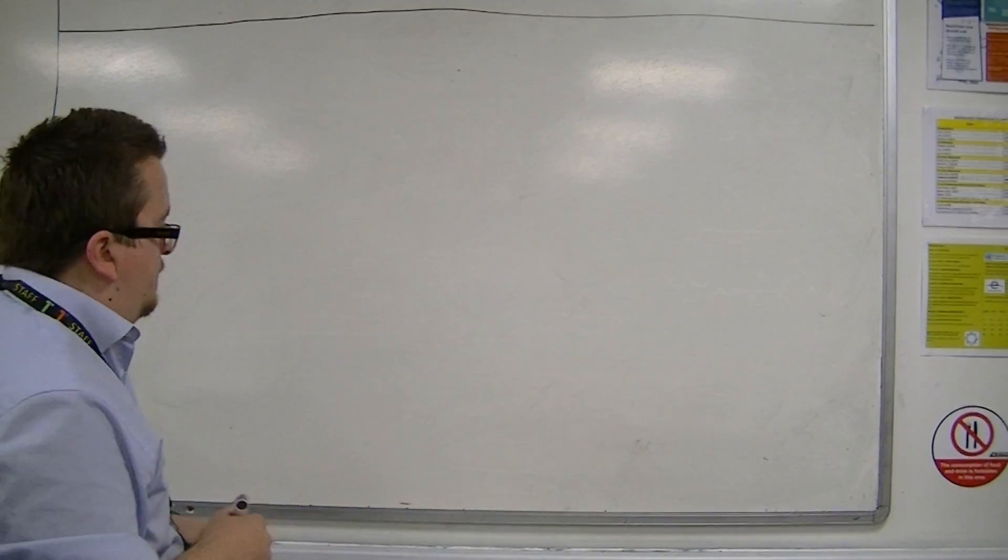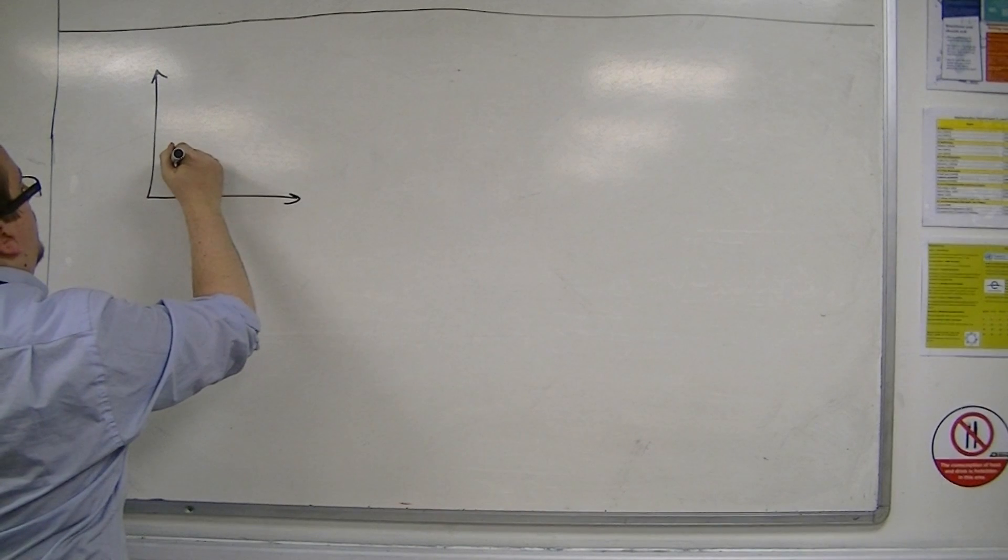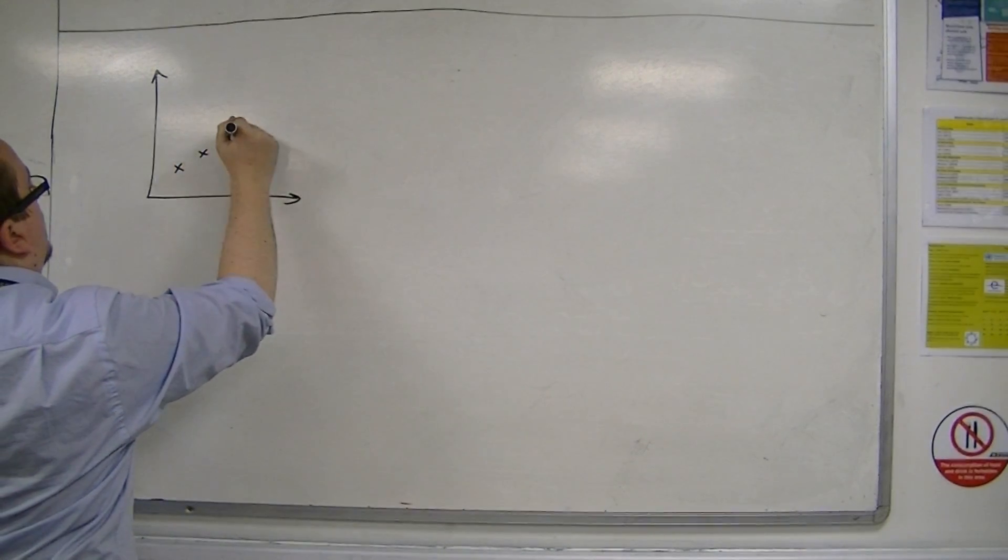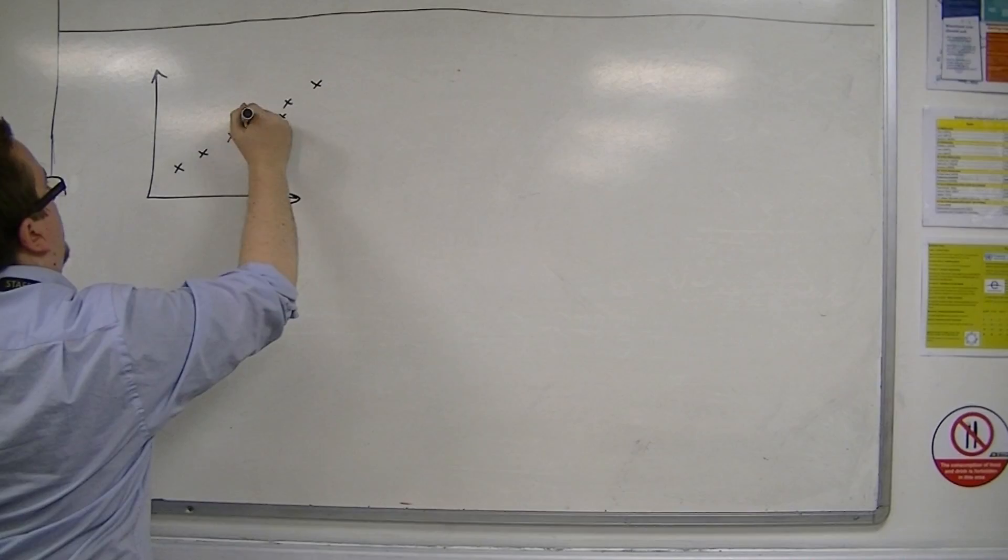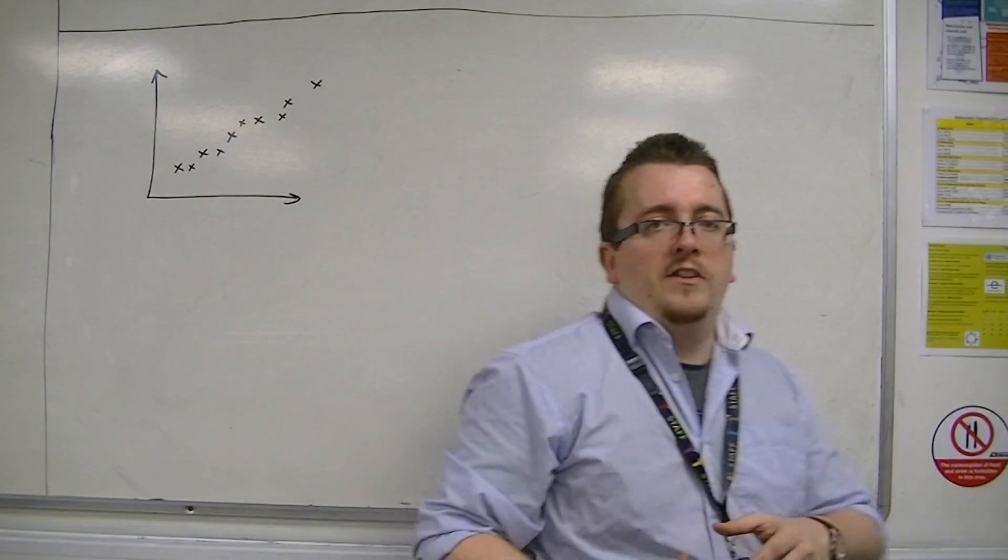So, if we've got a set of data that looks something like this, I'm just going to use something that's relatively positively correlated as an example.